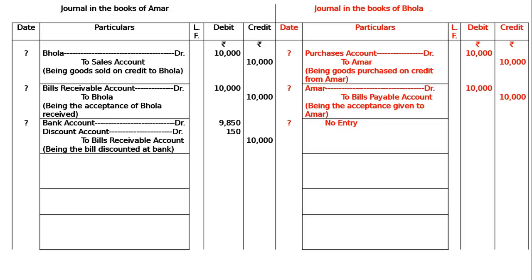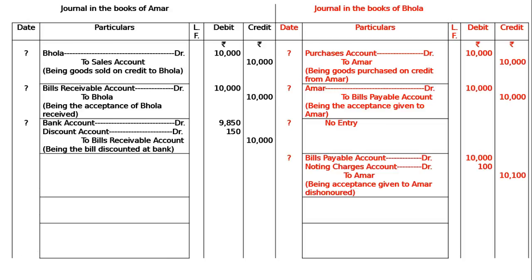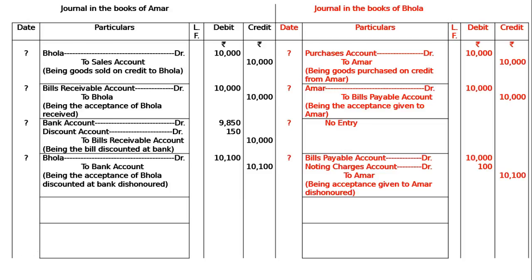Bhola fails to meet the bill on maturity and Ammar pays his bankers expenses amounting to Rs.100. On the due date the bill is dishonored. In the books of Bhola: Bills Payable account debited Rs.10,000 and Noting Charges account debited Rs.100, to Ammar Rs.10,100, being acceptance given to Ammar dishonored. In the books of Ammar: Bhola debited to Bank Rs.10,100 (bill value plus noting charges), being the acceptance of Bhola discounted at bank dishonored — the bank as holder in due course paid Rs.100 as noting charges, hence Bhola debited to bank.